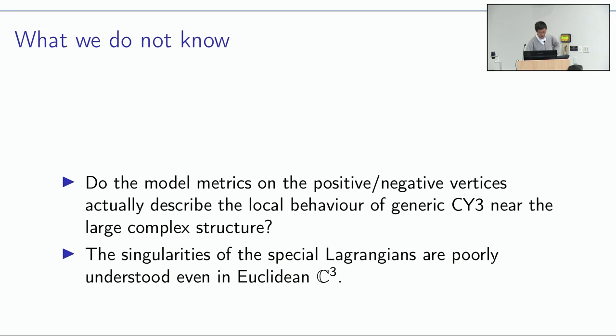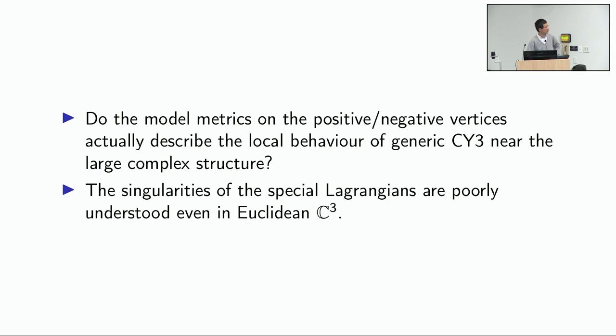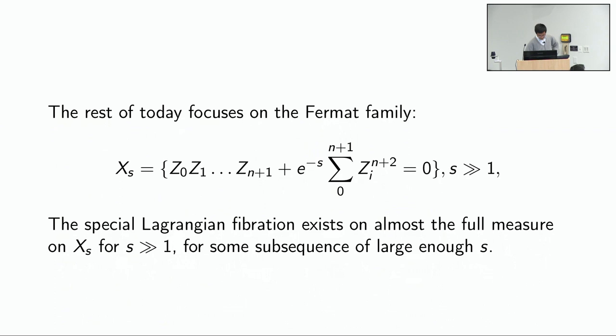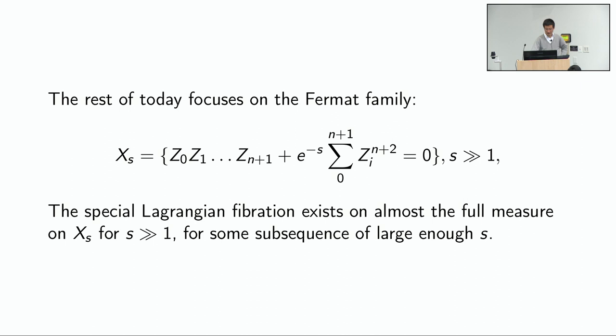We don't have control on the singular set of the Gromov-Hausdorff limit to say almost anything about its topology. We don't know that the singular set is codimension two — even the codimension two claim seems very far off. Whether or not the positive or negative vertices are actually metric local models for realistic compact Calabi-Yau degenerations seems to be a very hard question. The singularities of special Lagrangians are extremely difficult to understand, and even inside Euclidean C^3 that remains a very much open problem. The rest of today I'm going to focus on the much more explicit Fermat family.